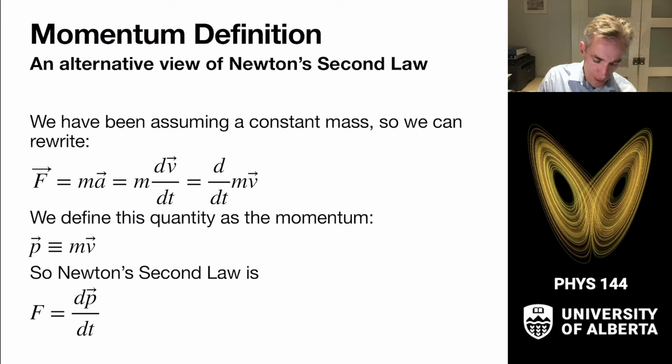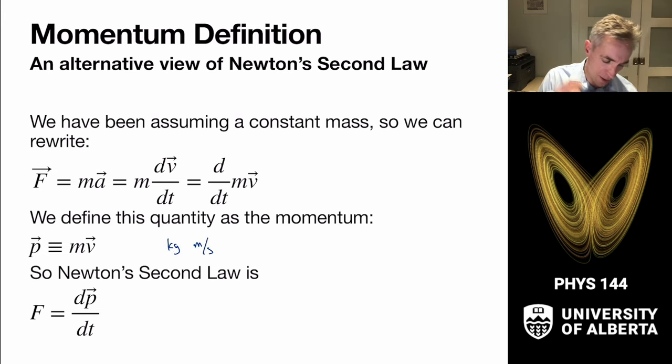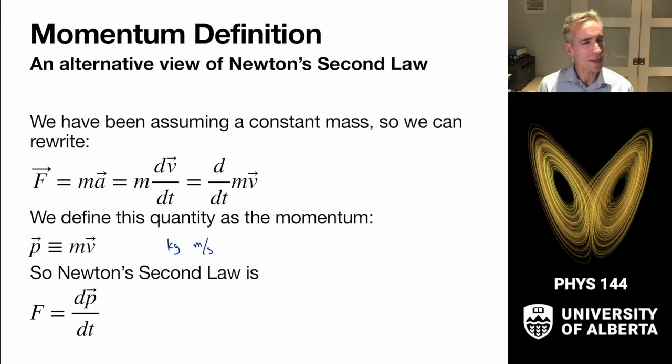The unit on momentum is kilogram meter per second, which you can figure out from m times v. It doesn't have a special name.